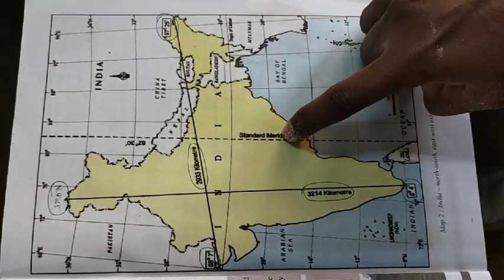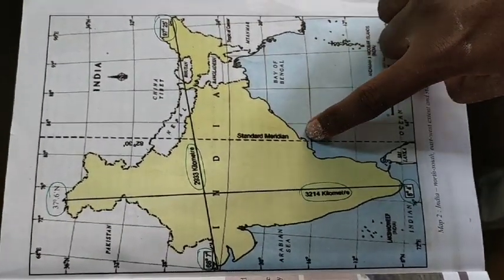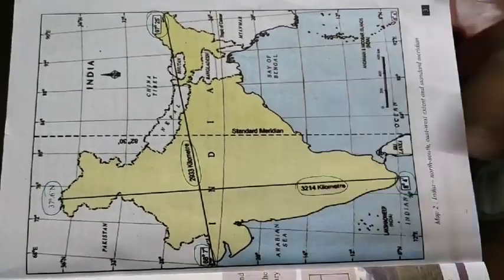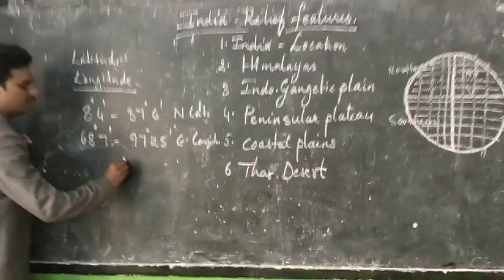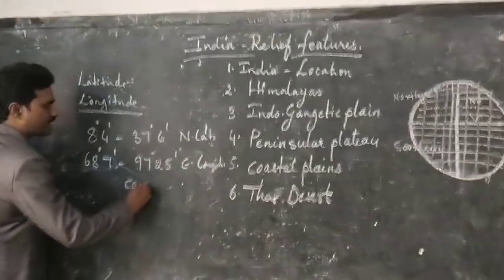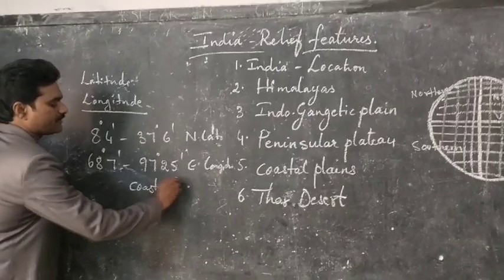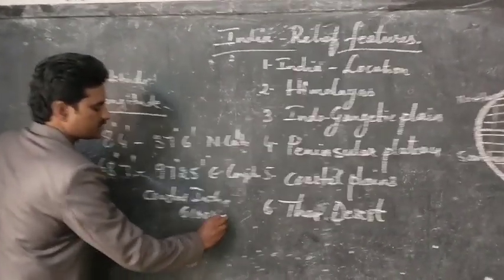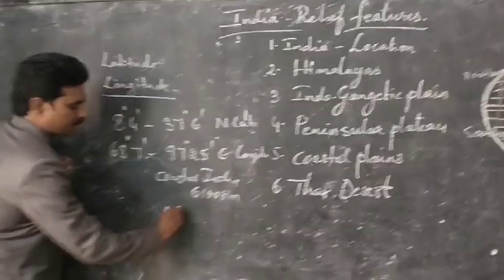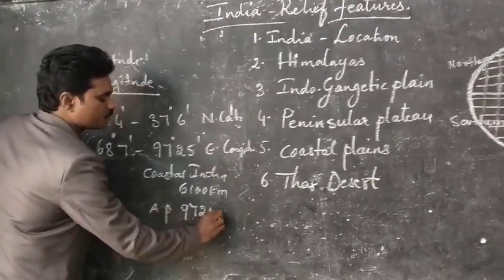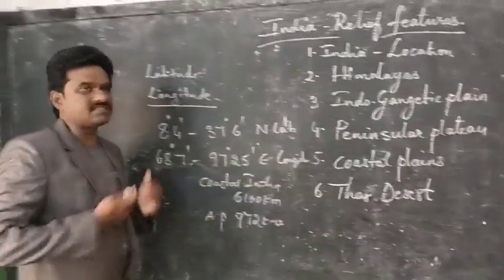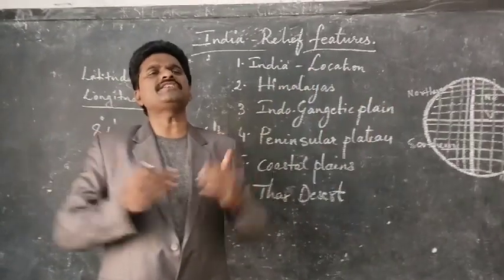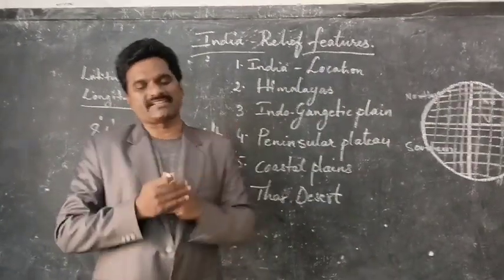In the same way, the Andhra Pradesh coastal line is 972 kilometers. Because of its vast coastal line, India is well connected with different countries through water transport.